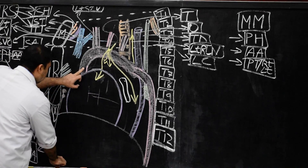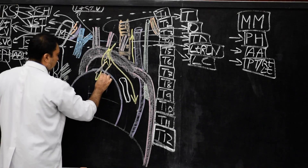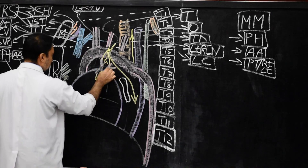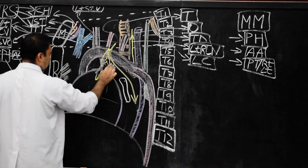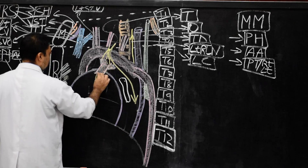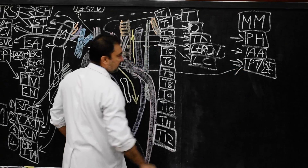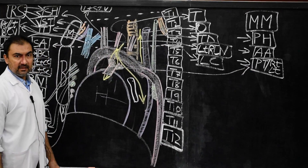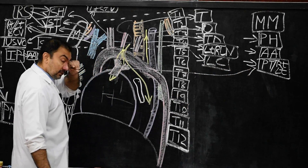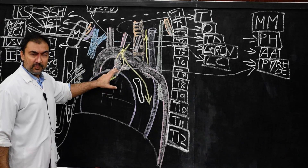Third structure will be the pulmonary trunk and its divisions into the right pulmonary artery and left pulmonary artery. These are three structures: pericardium and heart, ascending aorta, then pulmonary trunk and its two divisions — right and left pulmonary artery.